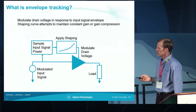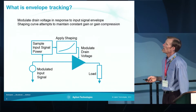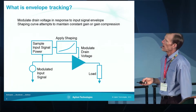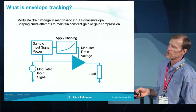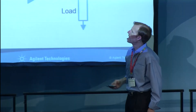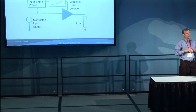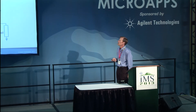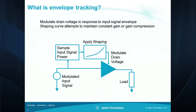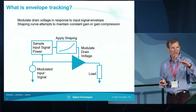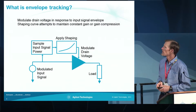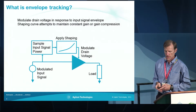This is a simple block diagram for simulating envelope tracking. We have a modulated input signal, we sample the input signal power, and we want to adjust the drain bias up and down as the amplitude or power of the modulated input signal changes. As we vary the bias on the PA, its gain is going to change, introducing distortion. A method of overcoming this is applying a shaping curve, so as we adjust the drain bias we can keep the amplifier operating at constant gain, or at a constant level of gain compression to maximize power added efficiency.